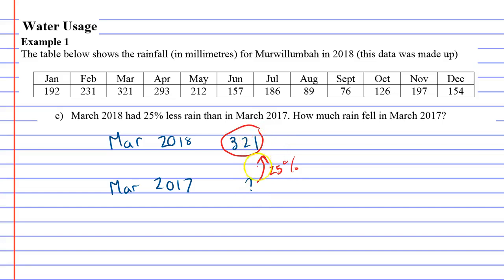This is one of those ones where you're decreasing or increasing by a certain amount, but you don't know the amount that you start with. And this is where we've got to use the four boxes rule.